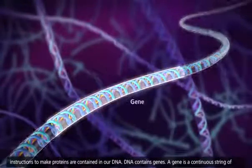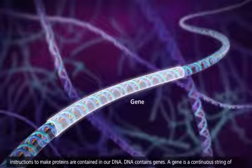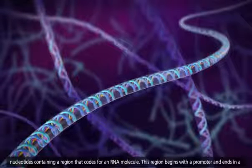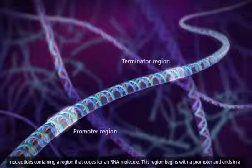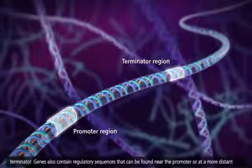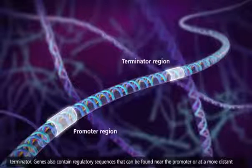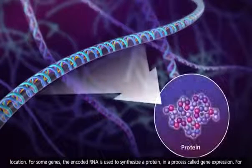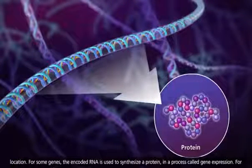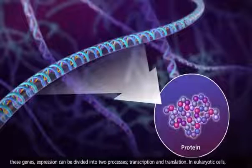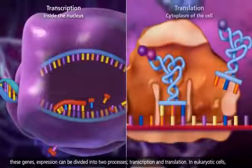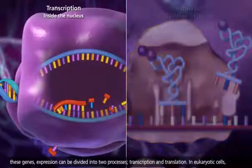DNA contains genes. A gene is a continuous string of nucleotides containing a region that codes for an RNA molecule. This region begins with a promoter and ends in a terminator. Genes also contain regulatory sequences that can be found near the promoter or at a more distant location. For some genes, the encoded RNA is used to synthesize a protein in a process called gene expression. For these genes, expression can be divided into two processes, transcription and translation.